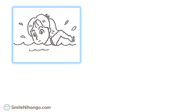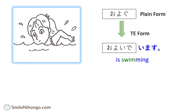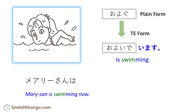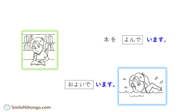What about this one — what is she doing? She's swimming, right. So now you have to use the verb 'swim,' which is 泳ぐ in plain form, and then change that to the te-form, which is 泳いで, and then add います to say 'she is swimming.' So to say Mary-san is swimming now, you say: メアリーさんは今泳いでいます. So now you know: 'is reading a book' is 本を読んでいます, and 'is swimming' is 泳いでいます.